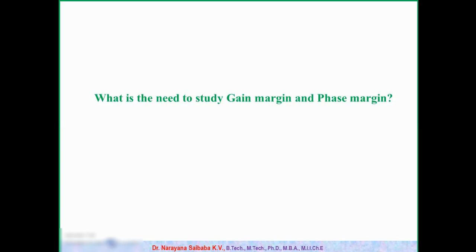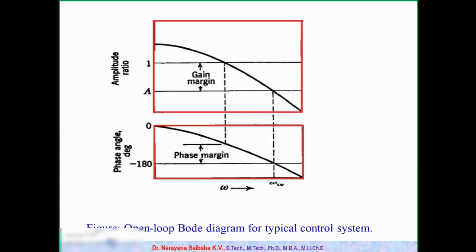So to quantify the degree of stability, the gain margin and phase margin concepts are introduced. To find gain margin and phase margin, we again use the Bode stability criteria and Bode diagrams. The Bode diagram consists of two plots.